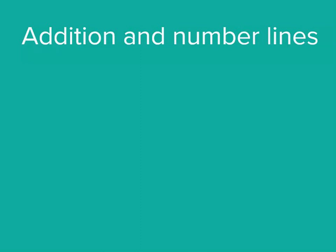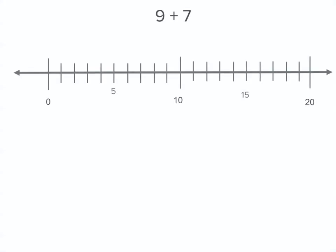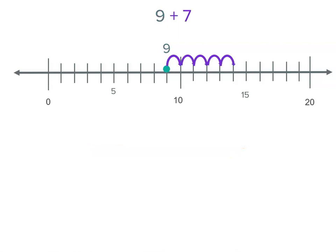Let's use number lines to solve addition. If we want to work out nine plus seven, we start at nine on our number line — nine is one before ten. Now we want to add seven, so we count by one. When we count, we go forward or to the right on our number line: one, two, three, four, five, six, seven. That means we're one past fifteen, which is sixteen.